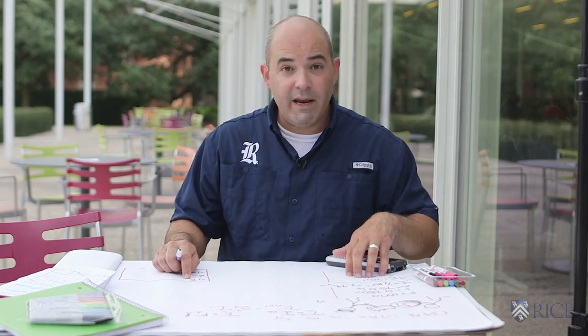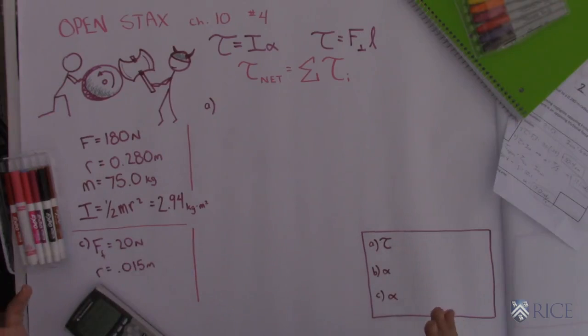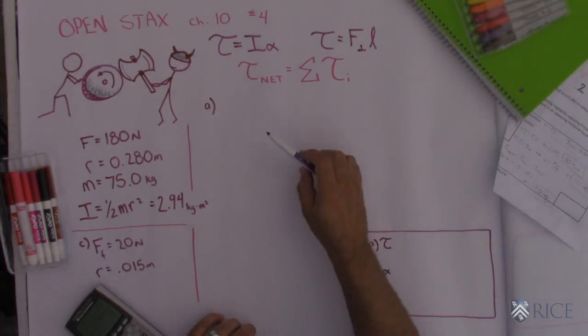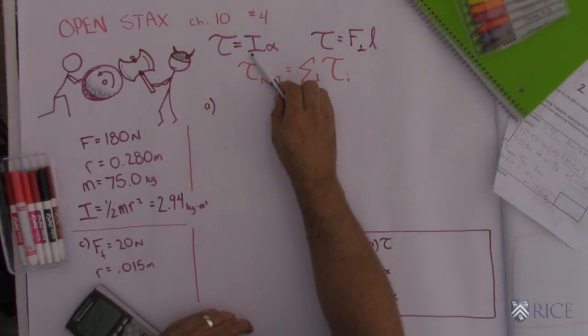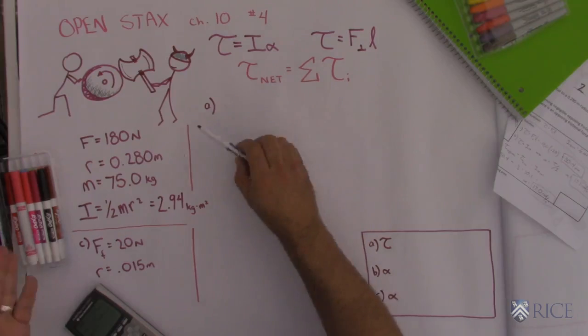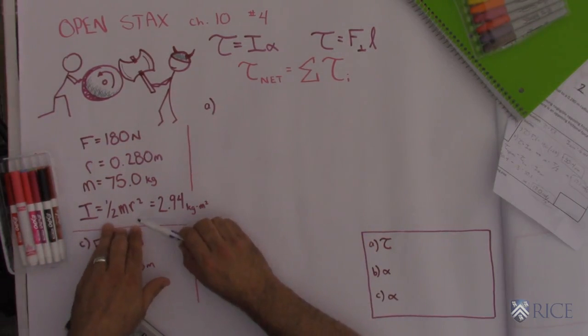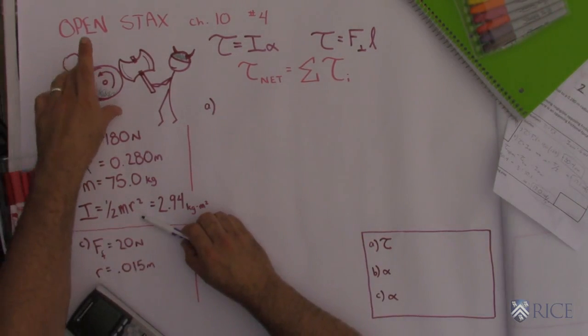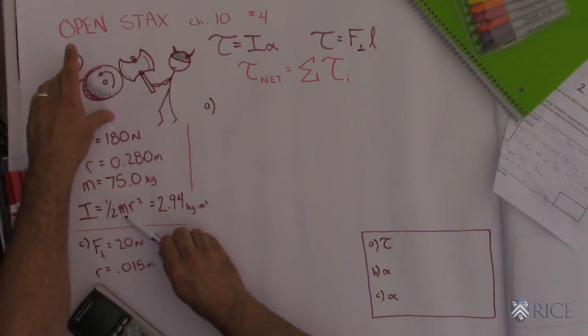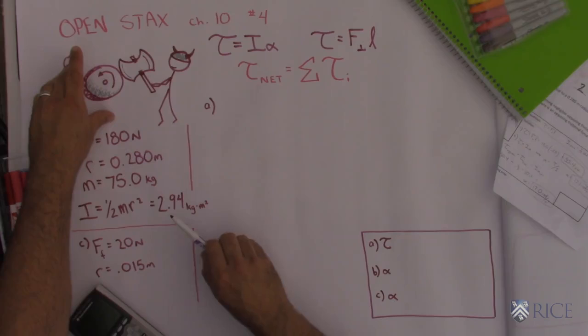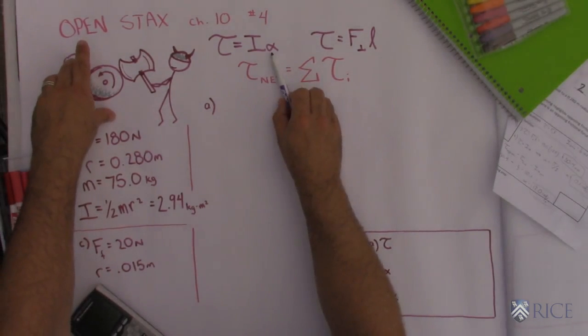For part A, to find the net torque, I've got two formulas that I could find torque with. One of them says, take the moment of inertia times the angular acceleration of the wheel. I went ahead and found the moment of inertia for you. Since we can assume the grindstone is a solid disk, it's going to be one half mR squared. So I went ahead and found the moment of inertia for you, but we can't find the net torque because we don't know the angular acceleration yet.